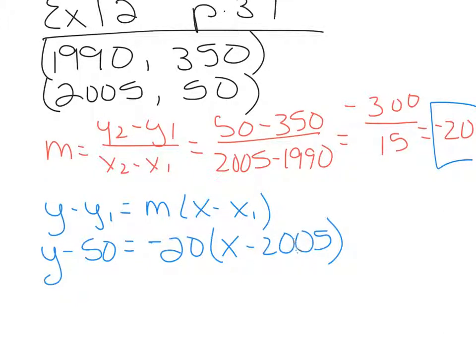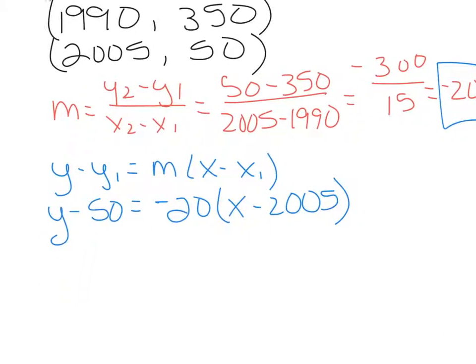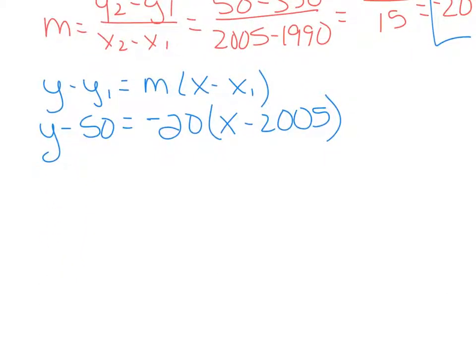Simplify, distribute here. I'm going to scroll up a little bit. So we have y minus 50 equals negative 20x plus sign here because we have a negative times a negative. 20 times 2005. You get your calculator out. You can check this. It's 40,100.